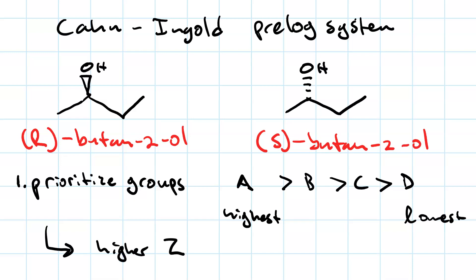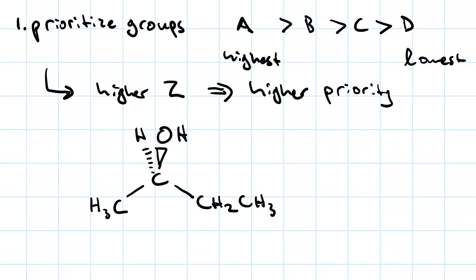Right, so the atomic number Z of the atoms involved gives you a higher priority. So start with the atom that's bonded to your chirality center. What do I have? I've got an oxygen with an atomic number of 8 and a hydrogen with an atomic number of 1 and then two carbons, both with an atomic number of 6. So it's clear to see that the hydroxyl group is priority A and the hydrogen is priority D.